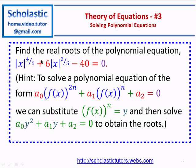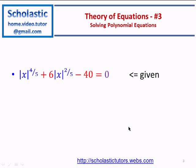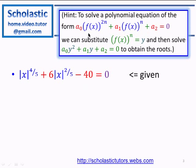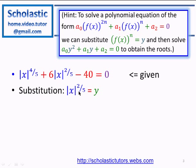Let's see the similarity. What is given is modulus x to the power 4 over 5, plus 6 times modulus x to the power 2 over 5, minus 40, equal to 0. Comparing with the hint: a0 is 1, f(x) is modulus x, and if we take n equal to 2 over 5, we can see the similarity. So we substitute modulus x to the power 2 over 5 with y.